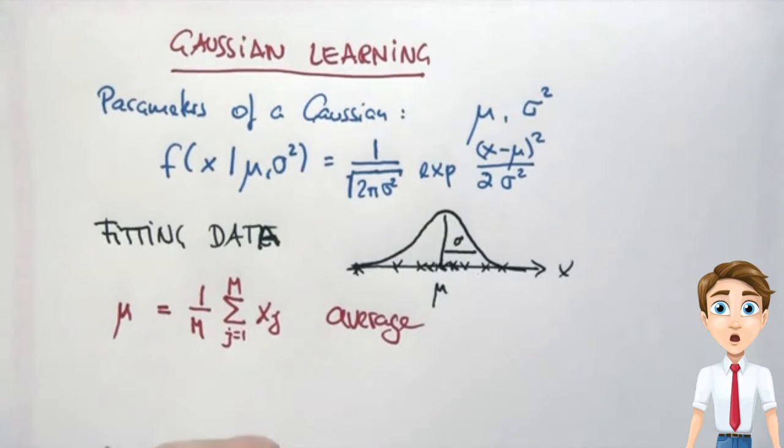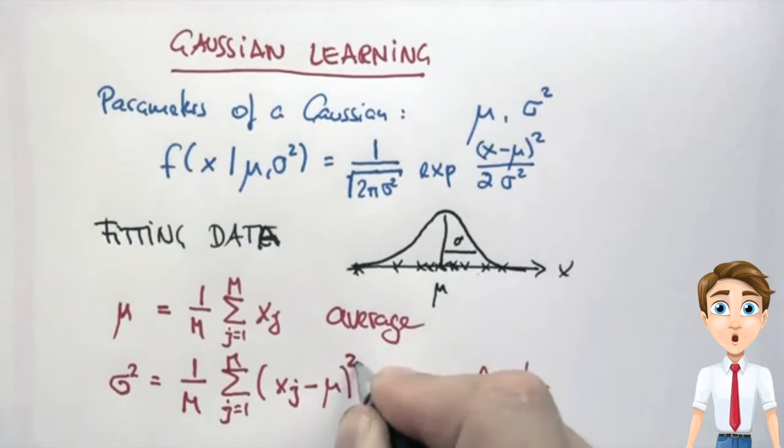And once you calculate the average, the sigma squared is obtained by a similar normalization in a slightly more complex sum. We sum the deviation from the mean and compute the average deviation squared from the mean, and that gives us sigma squared.